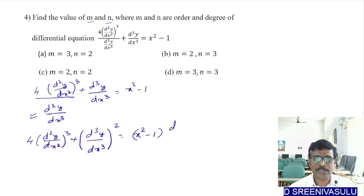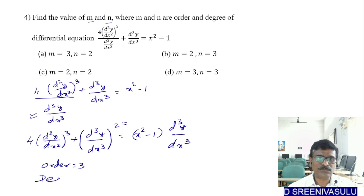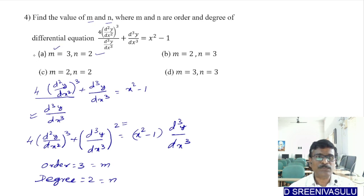After multiplying, the highest derivative is d³y/dx³ so order = 3. The highest power of d³y/dx³ is 2, so degree = 2. Therefore m = 3 and n = 2. Option A is correct.